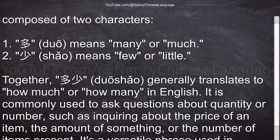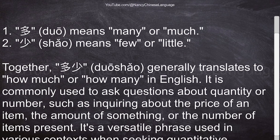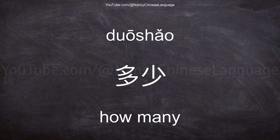Together, 多少 generally translates to how much or how many in English. It is commonly used to ask questions about quantity or number, such as inquiring about the price of an item, the amount of something, or the number of items present. It's a versatile phrase used in various contexts when seeking quantitative information.